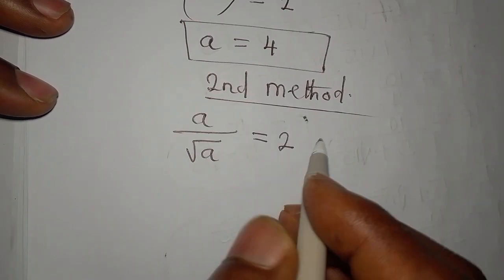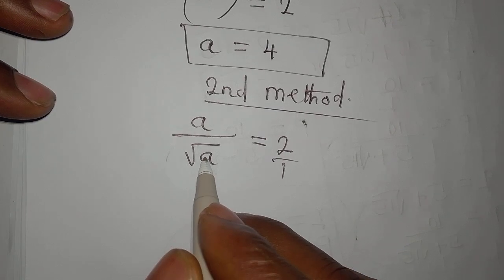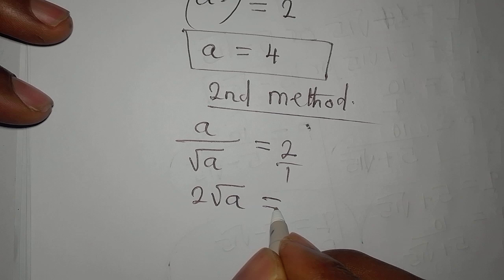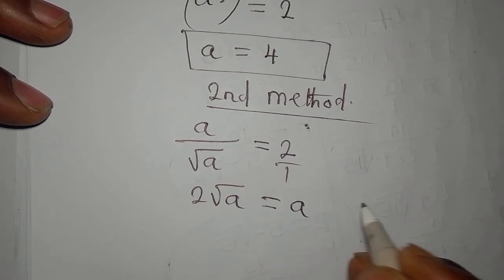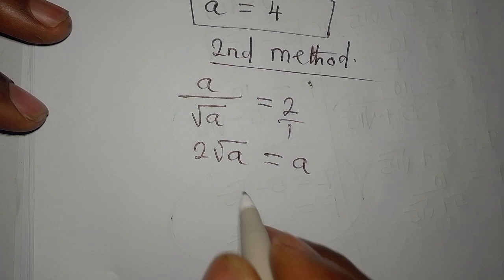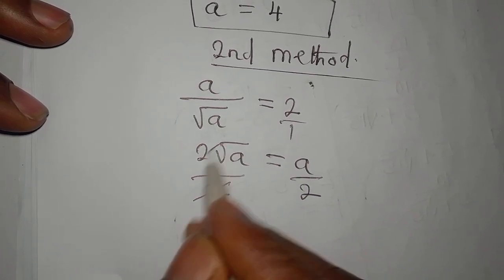Believe that this is over 1, so that root a times 2 will give us 2 root a, and that is equal to a times 1, which is a. Now divide both sides by 2 so that we'll have root a on its own.